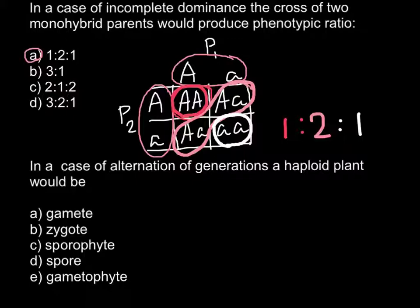And the next question is, in a case of alternation of generations, a haploid plant would be? And here are 5 answers that you may choose from, and I would start with answer A.